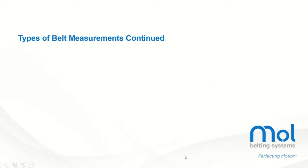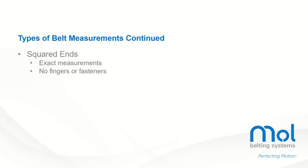After you have your measurement, you'll need an ordering term. Squared ends refers to a belt that would be cut exactly to length. Open ends refers to a belt that is not to be below a certain length but could come over.